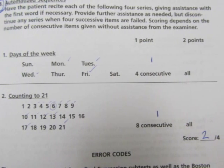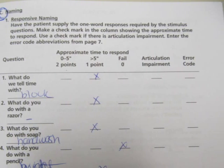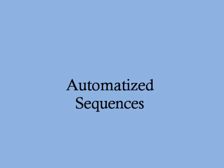For oral expression, we will be administering the automatized sequences and responsive naming tasks. The clinician asks the patient to recite the days of the week starting with Sunday. The patient responds: 'Monday, Tuesday, Wednesday.' When prompted for what comes after Wednesday, the patient says 'Friday,' then confirms that is the end of the week.